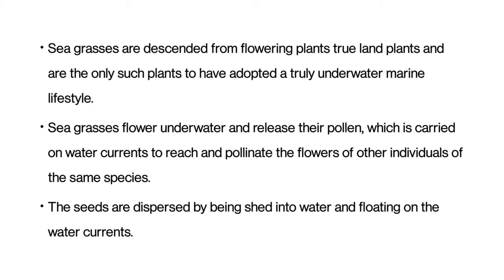Seagrasses are descendants from flowering plants — true land plants — and are the only such plants to have adopted a truly underwater marine lifestyle. Seagrasses flower underwater and release their pollen, which is carried on water currents to reach and pollinate the flowers of other individuals of the same species. The seeds are dispersed by being shed into water and floating on the water currents.